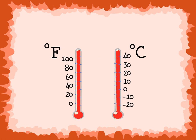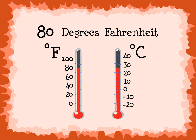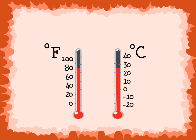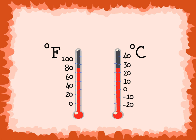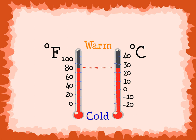Here are two thermometers. The one on the left measures temperature using degrees Fahrenheit — the red is on the 80 degree mark. We would say 80 degrees Fahrenheit. The thermometer on the right measures temperature using degrees Celsius — the red is about on the 25 degree mark. We would say 25 degrees Celsius. The amount of red you see shows how warm or cold the temperature is. In these thermometers we see a lot of red, so 80 degrees Fahrenheit and 25 degrees Celsius are very warm temperatures. These are temperatures where you could swim, go to the beach, and wear shorts and short sleeve shirts.